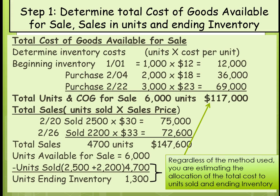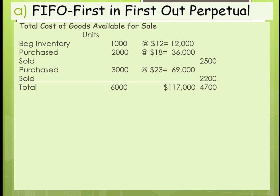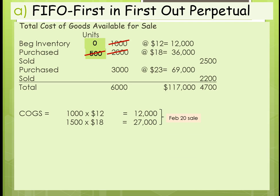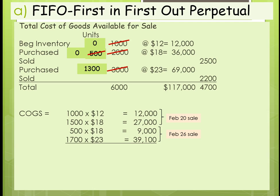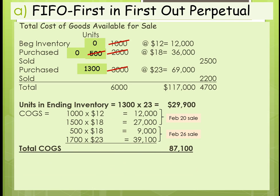We're going to start with FIFO. For FIFO, we sold 2,500 units — we go back to our oldest first, so those would all be gone and we end up with 500 of those. Then we sold 2,200 — we go back to our oldest units again, and now we have none of those left and only 1,300 at $23 each. Those are the two sales. We've got our total cost of goods sold and our units in ending inventory, which are at the most recent costs. That totals our cost of goods sold and cost of goods available for sale if we add up ending inventory and cost of goods sold.